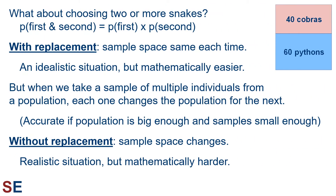What about situations when we choose two or more snakes? To figure out the probability of the first and second, this would be equal to the probability of the first times the probability of the second if those events are independent. When we do sampling with replacement, we take an individual, assess it, and replace it back into the population before we take the second individual. In this way, the sample space is the same each time. This is an idealistic situation and not usually how things work in the real world, but it is mathematically easier.